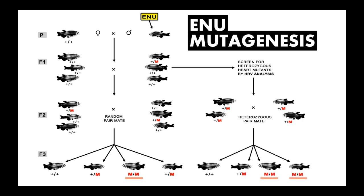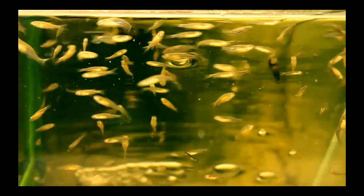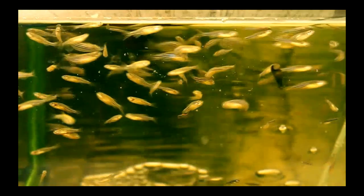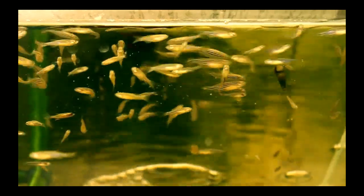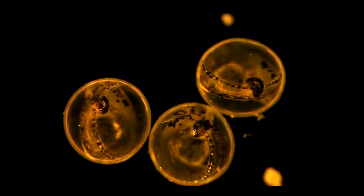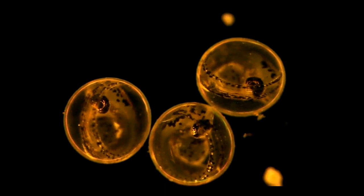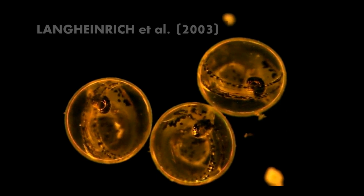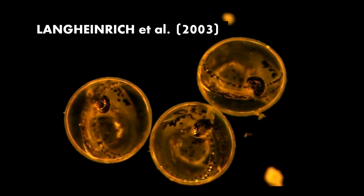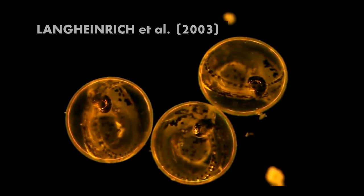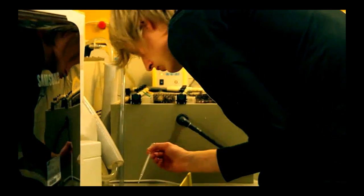To verify whether heterozygous heart mutants display significant changes in heart rate and HRV, we chose the zebrafish breakdance mutant, which was discovered during an ENU screen. Breakdance mutants express a defective potassium channel involved in repolarization,